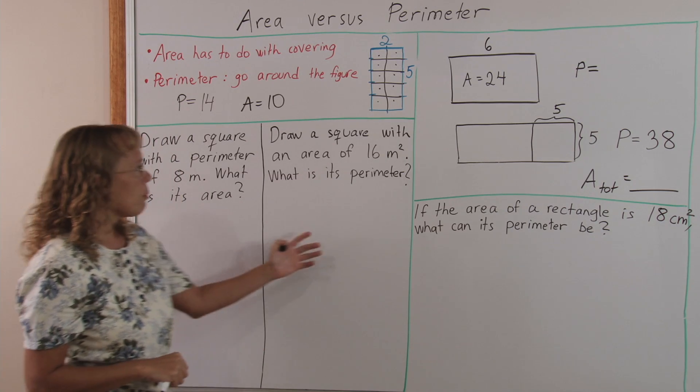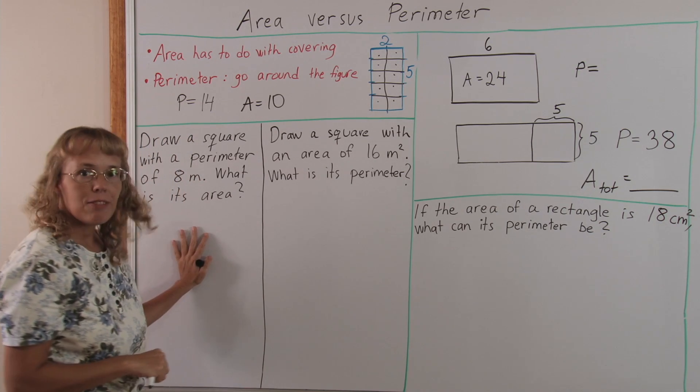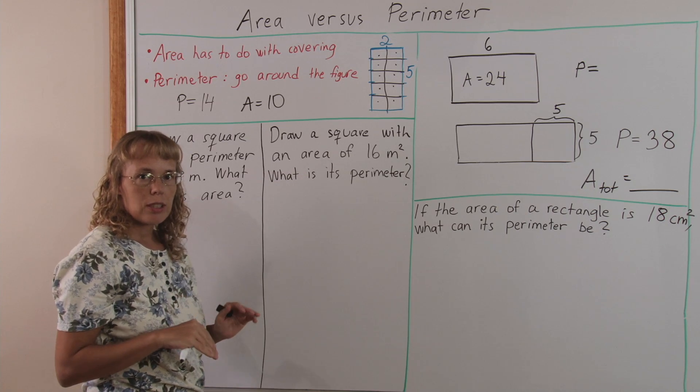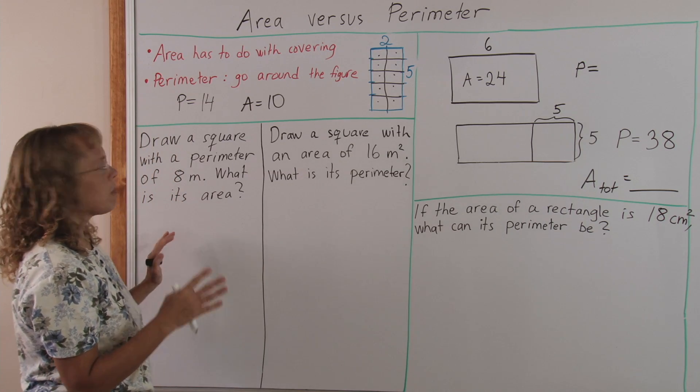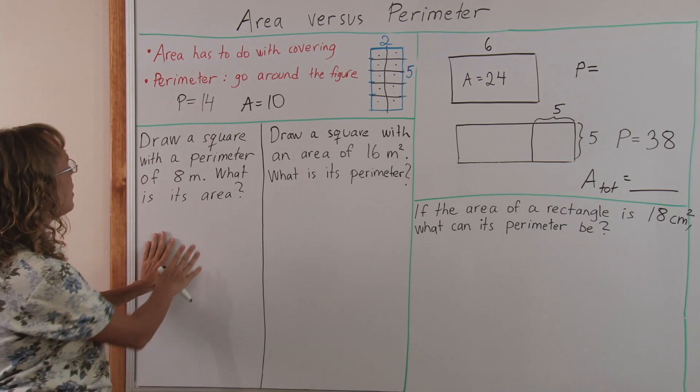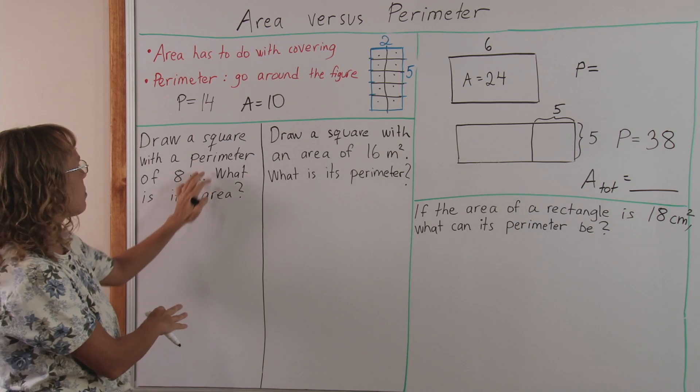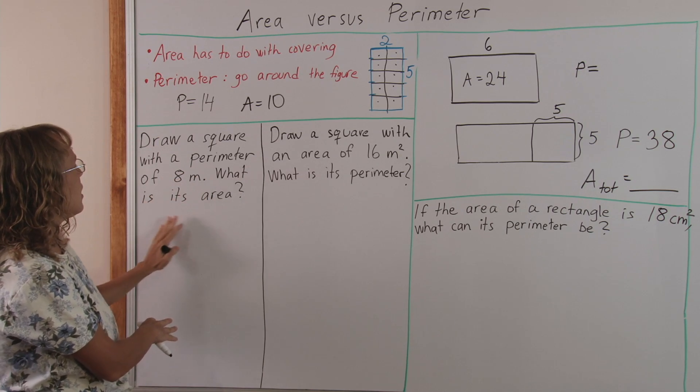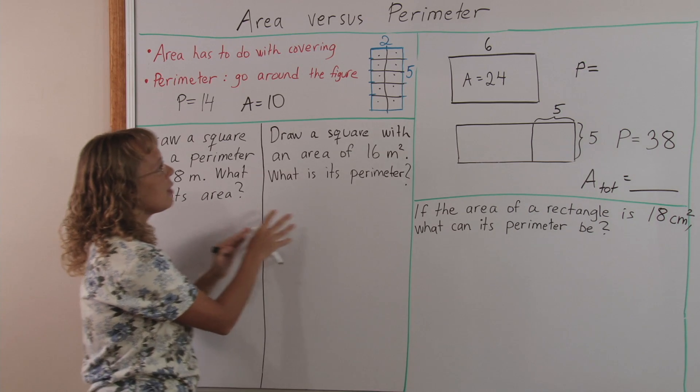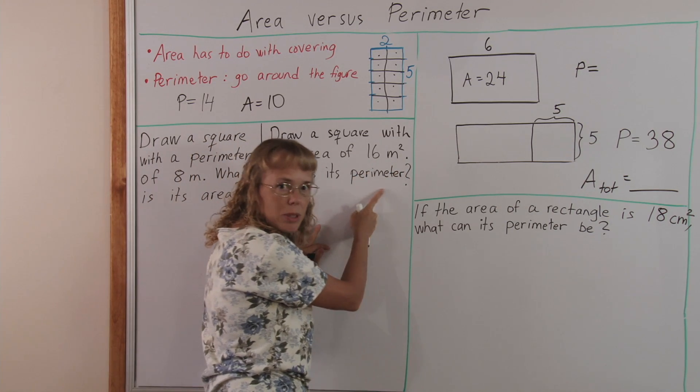Here I wrote two problems that are similar, yet very different, but they can help students to notice the differences between these two concepts. Here is draw a square with a given perimeter, perimeter is eight meters, and asking for area. Here the area is given, and it's asking for perimeter.